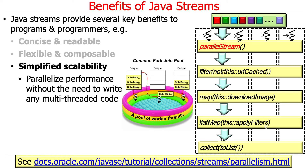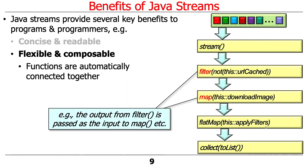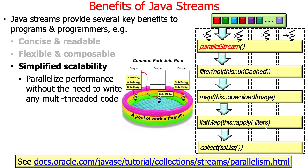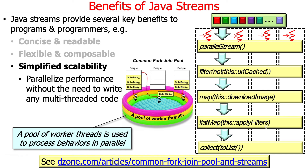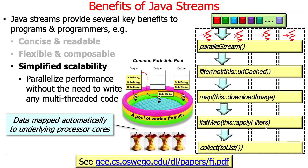Another major benefit you get with Java streams is simplified scalability. We can parallelize performance without writing any multi-threaded code. We can change from stream to parallel stream, and all of a sudden we're taking advantage of the common fork join pool and multi-core processors with split-apply-combine phases. You'll never see a new thread, a thread join, or a fork — all that stuff is completely hidden from you under the hood.